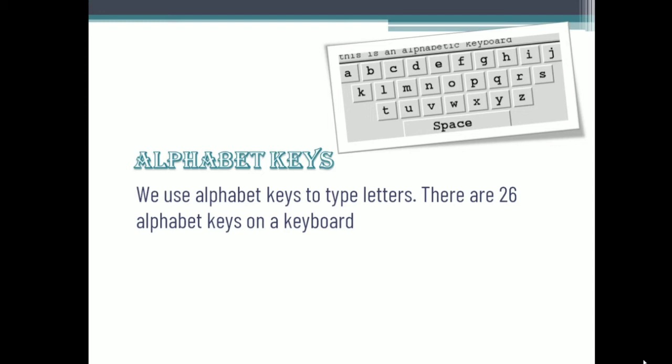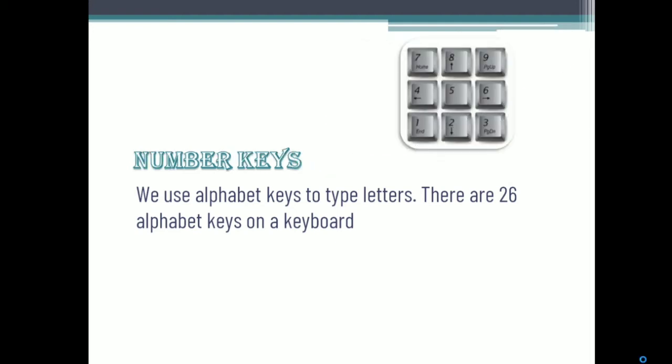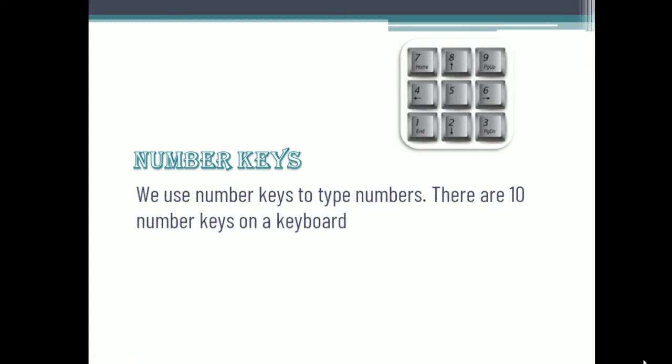It is also possible to type both small letters and capital letters using the alphabet keys. The second type of keys on the keyboard are called number keys. We can use the number keys to type numbers. There are 10 number keys on a keyboard, which start from 0 to 9.